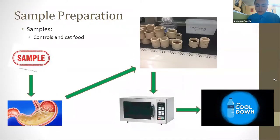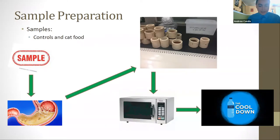The first step involves quantification of these mercury levels. All samples were evaluated in triplicate with appropriate controls. The samples are digested in nitric acid, placed inside bomb shells, and enter a microwave. They are heated and then follow a subsequent cool down period.